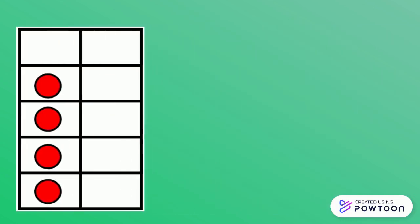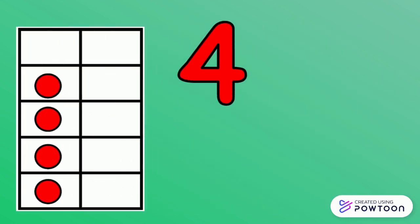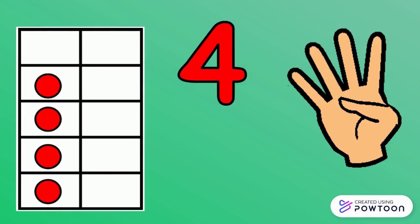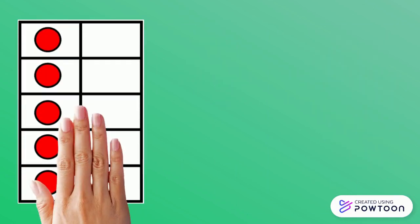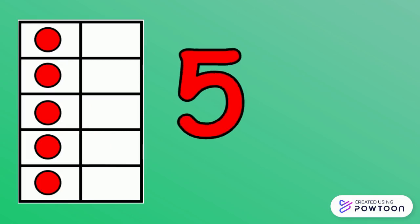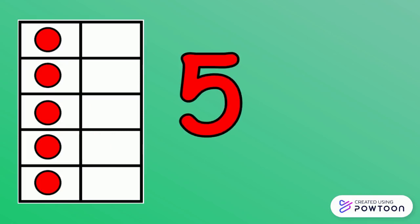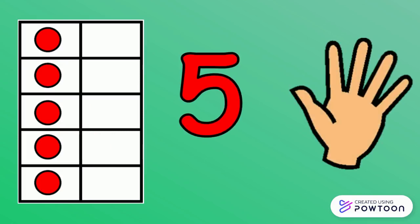There are four red circles. The number is 4. There are five red circles. The number is 5.